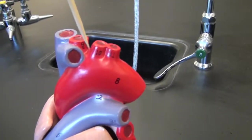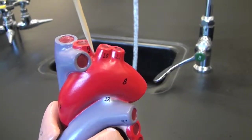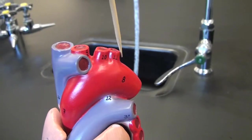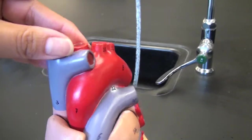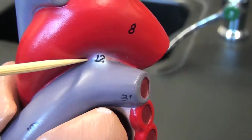Brachiocephalic trunk, left common carotid artery, left subclavian artery. This white portion right here is the ligamentum arteriosum.